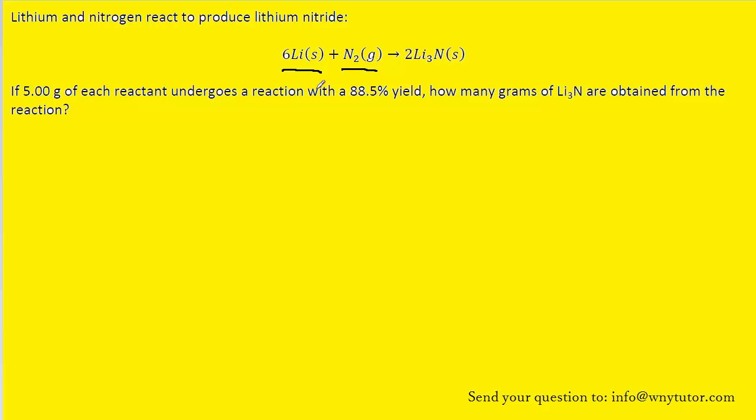We are told that we have 5 grams of each reactant, so we'll take 5 grams of the lithium and 5 grams of the nitrogen and try to calculate how much product we would obtain. Let's work with the lithium first. In determining how much product is produced, we have to do a series of unit conversions.